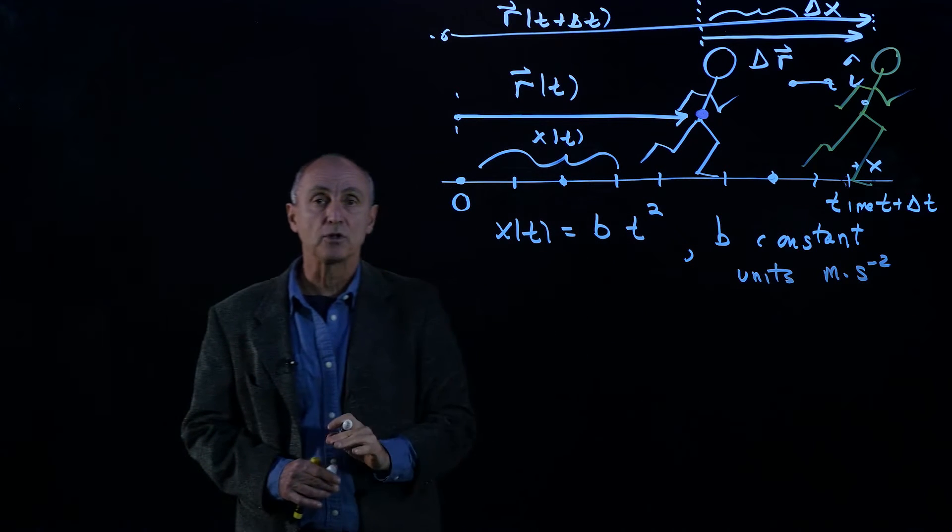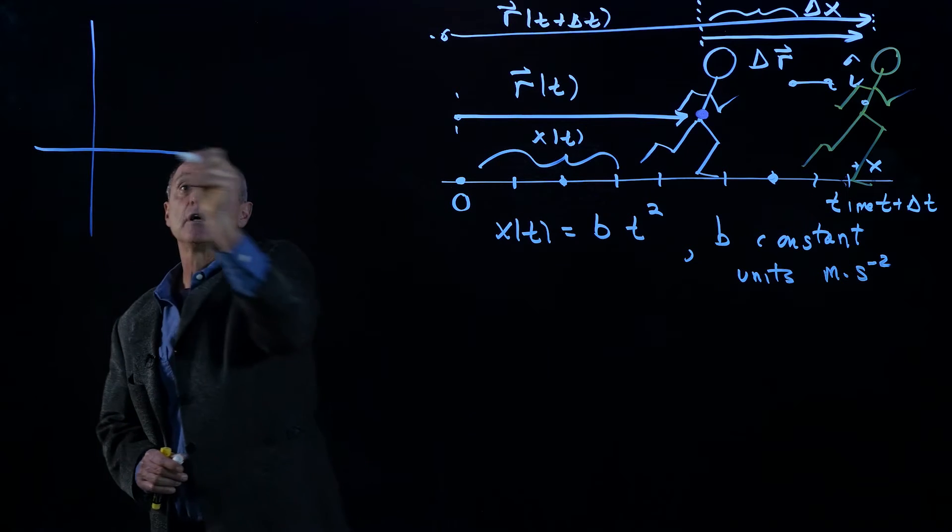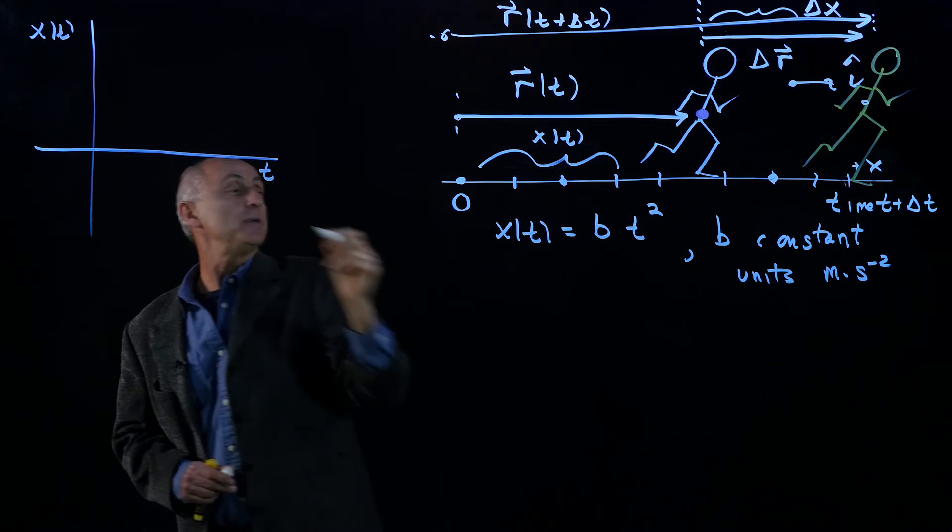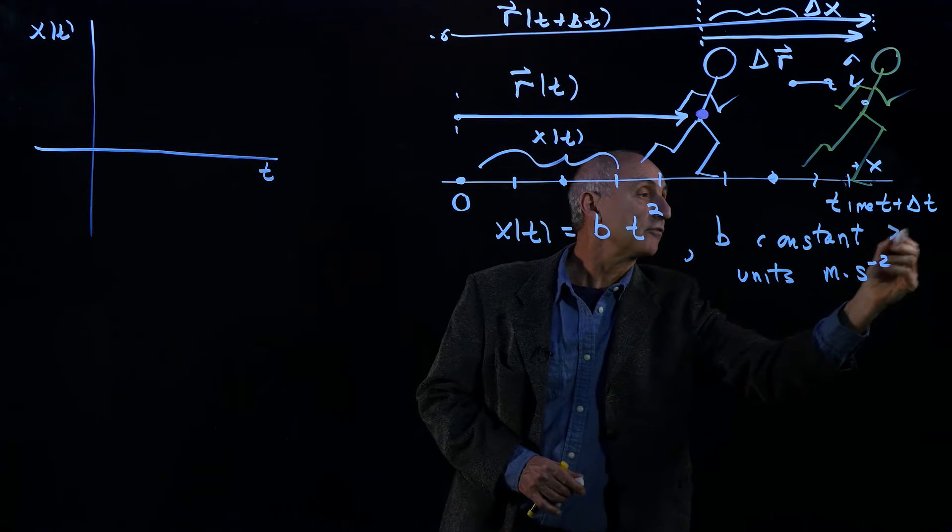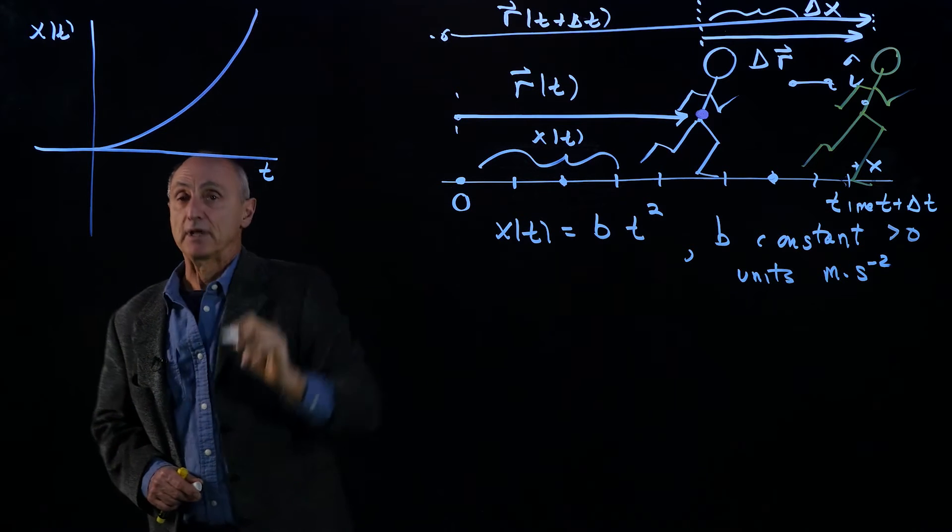And there's an example of a runner, and let's make a plot of that position function. So we're going to plot x(t) as a function of time. Let's make b a positive constant, and so our function looks something like that.